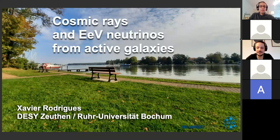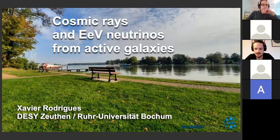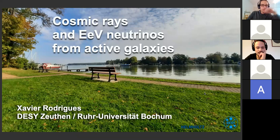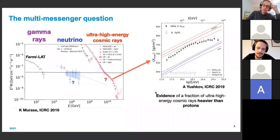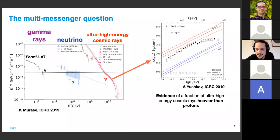His work includes understanding the diffuse flux of high-energy neutrinos within the blazar sequence, lepto-hadronic modeling of the TXS blazar flare, and AGN jets as sources of high-energy neutrinos and ultra-high-energy cosmic rays. Today he's going to talk about cosmic rays and EeV neutrinos from active galaxies. Thanks a lot Mauricio, Irena, and Marcus for having me — it's really exciting to share this. Please feel free to interrupt and discuss at any time.